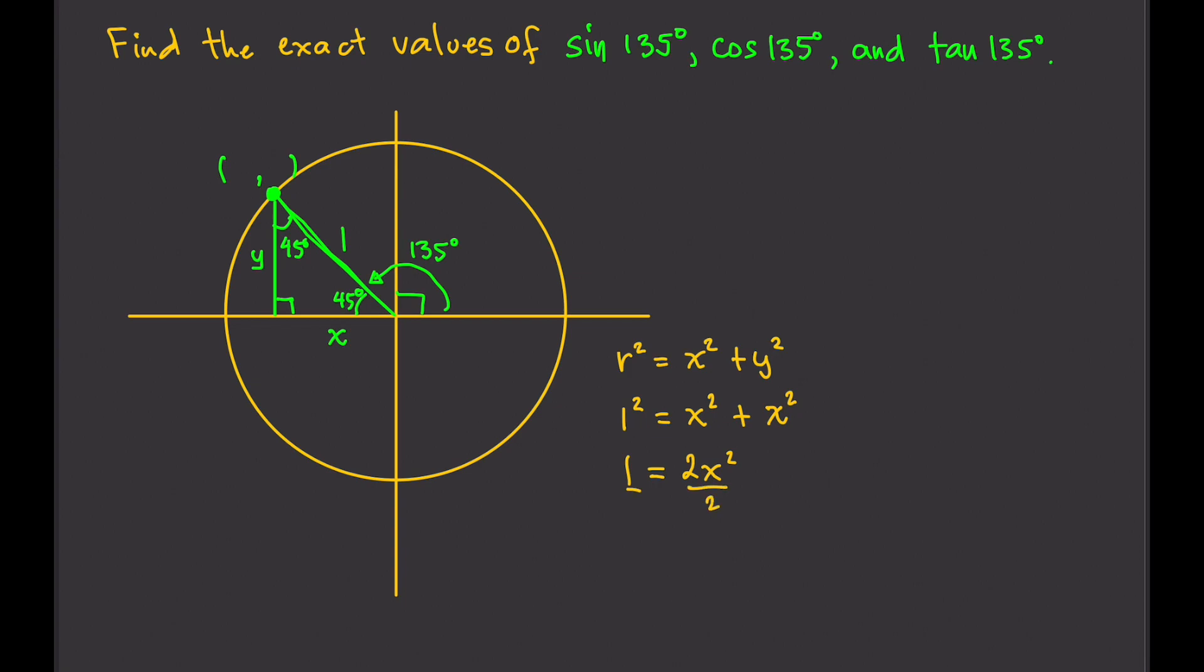Divide both sides by 2. That gives us x squared equals 1 half. Then take the square root of both sides. That gives us x equals positive negative square root of 1 half. And we can simplify this by rationalizing. This will actually give us positive negative square root of 2 over 2. So that's x. And of course, since that is x, then that should also be y.